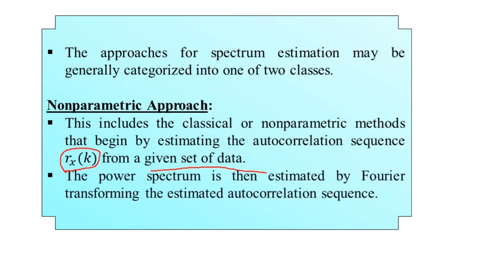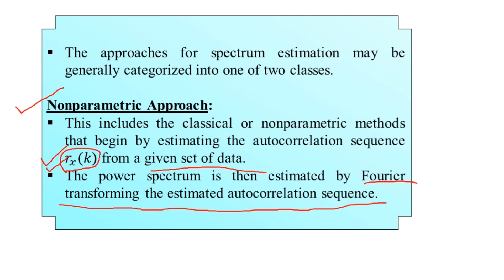There are two general approaches to power spectrum estimation. The first is the non-parametric or classical approach, which involves estimating the autocorrelation sequence R_x(k) from given data, then estimating the power spectrum via the Fourier transformation of this estimated autocorrelation sequence R̂_x(k). Techniques under the non-parametric approach include the periodogram, the modified periodogram, Bartlett's method, Welch's method, and the Blackman-Tukey approach.